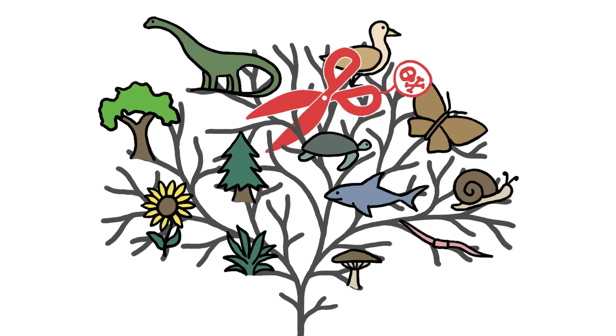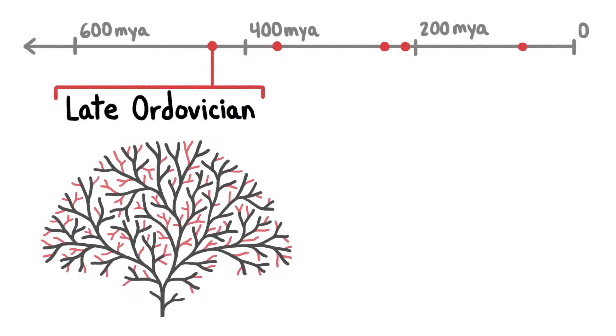What isn't arbitrary is that some mass extinctions alter the evolutionary tree of life far more radically than others. For example, the first of the Big Five pruned away more than 80% of the species on Earth, but it left all the big branches of the tree intact, so life went on more or less as it had before.